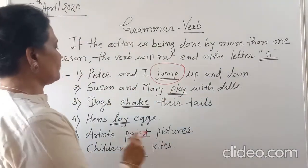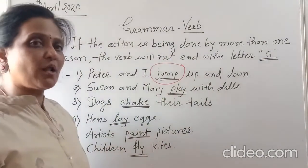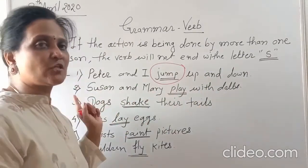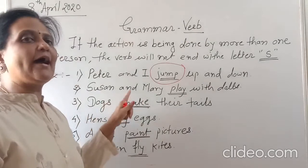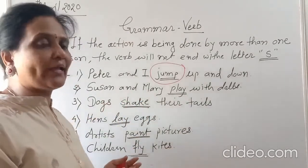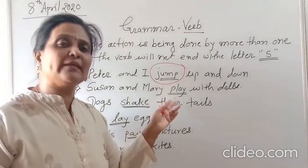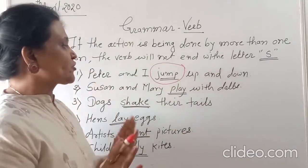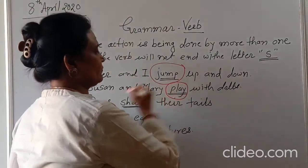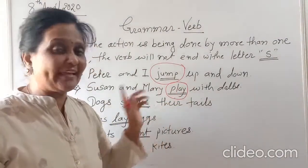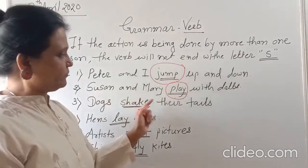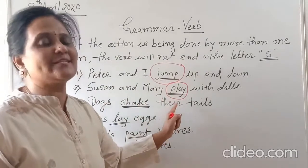Susan and Mary play with dolls. Who plays with dolls? Susan and Mary. How many persons in this sentence? Two — Susan and Mary. More than one person in this sentence. What are they doing? They play with dolls. So the action word is 'play'. We cannot use 'plays' here, because there are two persons in this sentence — Susan and Mary. So we cannot use 's' with this action word.